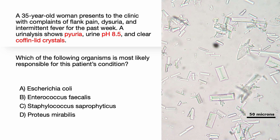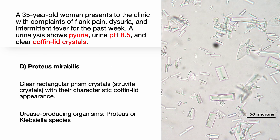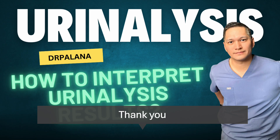Here's a 35-year-old female who presents to your clinic with complaints of flank pain, dysuria, and intermittent fever for the past week. A urinalysis shows pyuria, urine pH 8.5, and coffin-lid-shaped crystals. Which of the following organisms is most likely responsible: E. coli, Enterococcus, Staph, or Proteus? The correct answer is D, Proteus. Struvite crystals are clear rectangular prism crystals, also called coffin-lid crystals, and are only seen in UTIs caused by urease-producing organisms like Proteus or Klebsiella. This ends the talk on how to interpret urinalysis results.